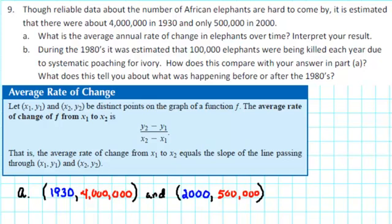The reliable data about the number of African elephants are hard to come by. It is estimated that there were about 4 million in 1930 and only 500,000 in 2000. Part A: What is the average annual rate of change in elephants over time? Interpret your result.